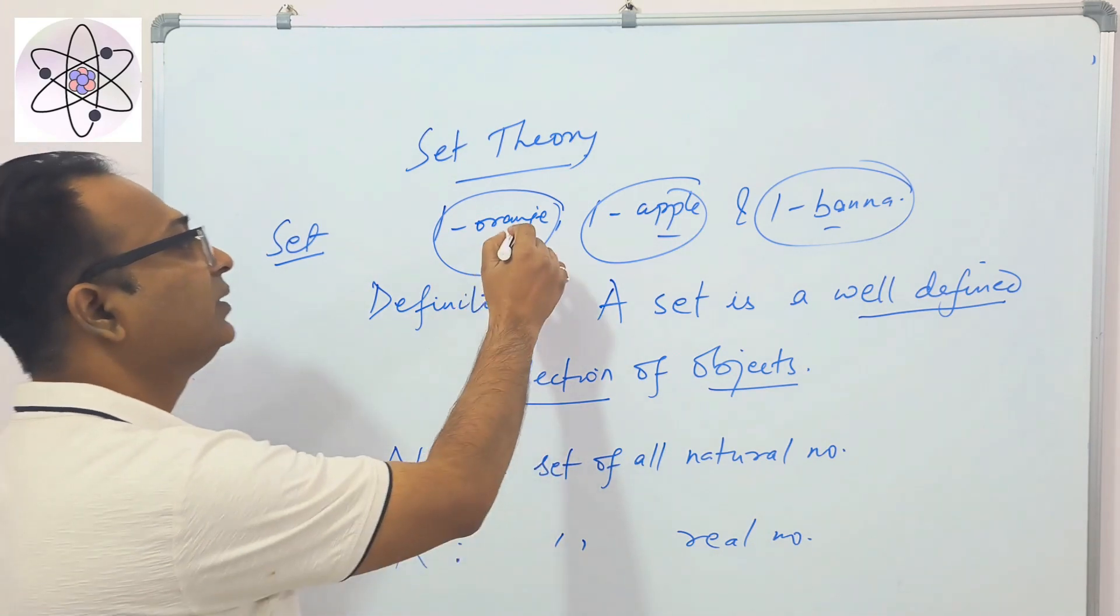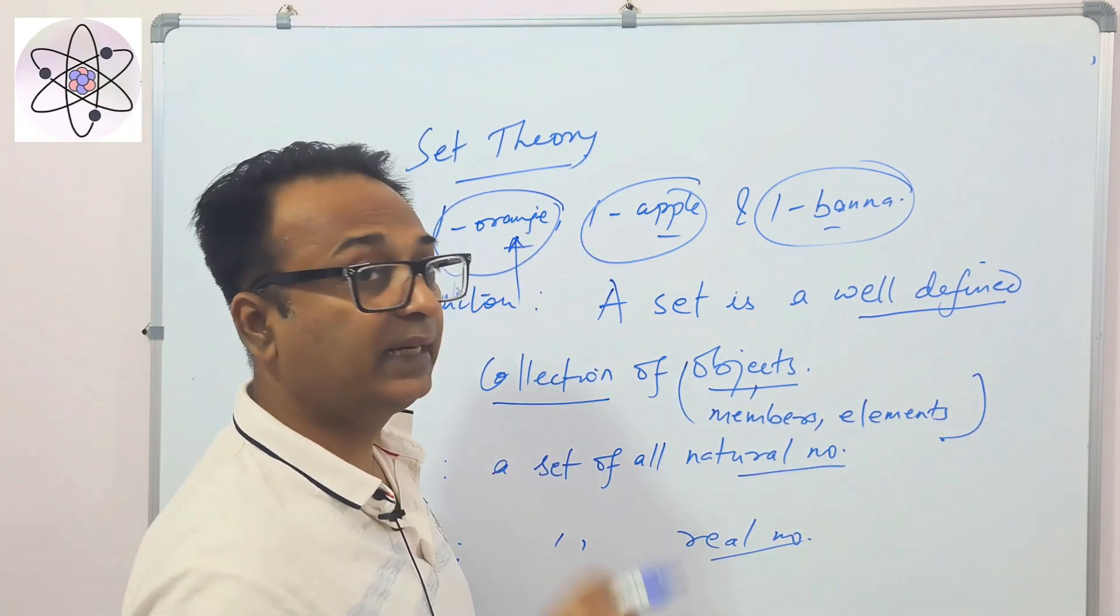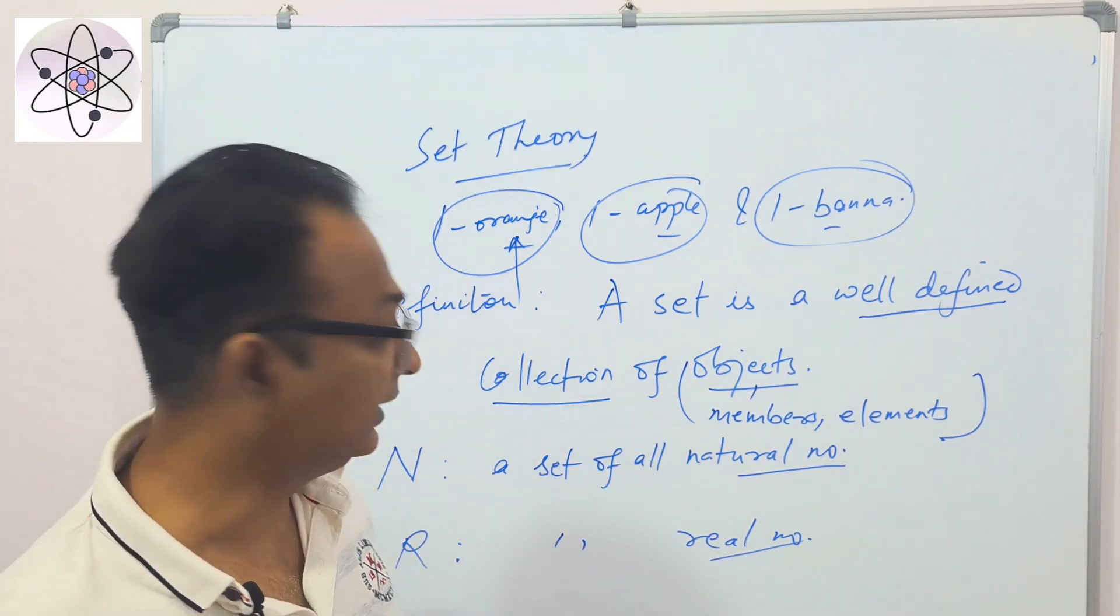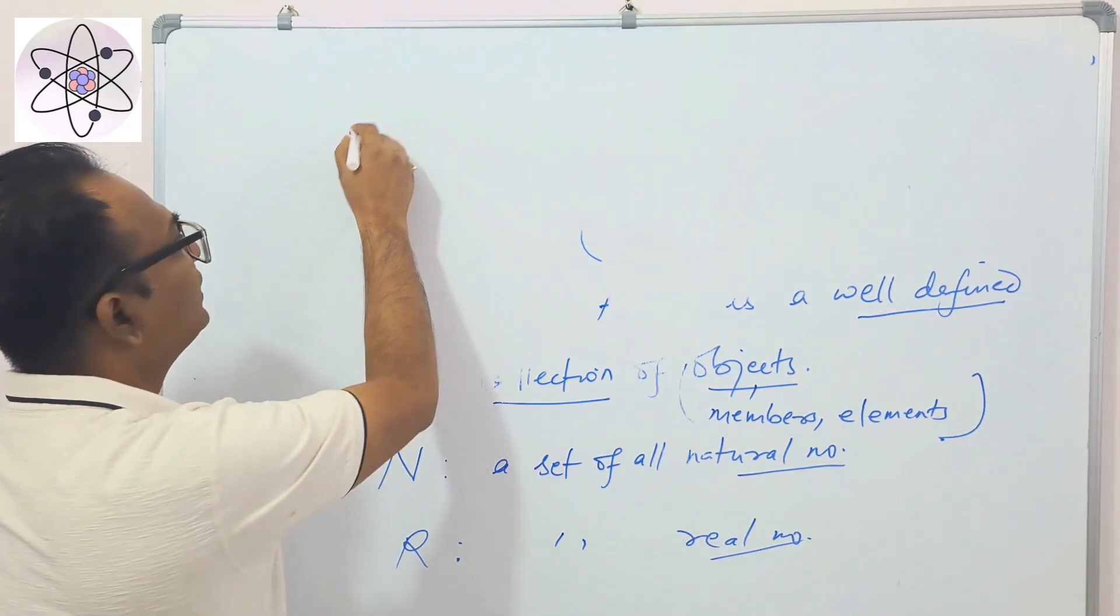You are now familiar with what objects are. Objects in a set have to be well-defined. For example, objects that are well-defined like natural numbers. A set of excluded natural numbers.